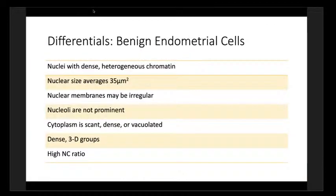For benign endometrial cells as a differential, the average nuclear size is about 35 microns. The chromatin density is worth considering. Generally, nucleoli are not seen in benign endometrial cells. The groups are still dense and 3D. If we can see both the epithelial and stromal components, that is very helpful. N/C ratios remain high.